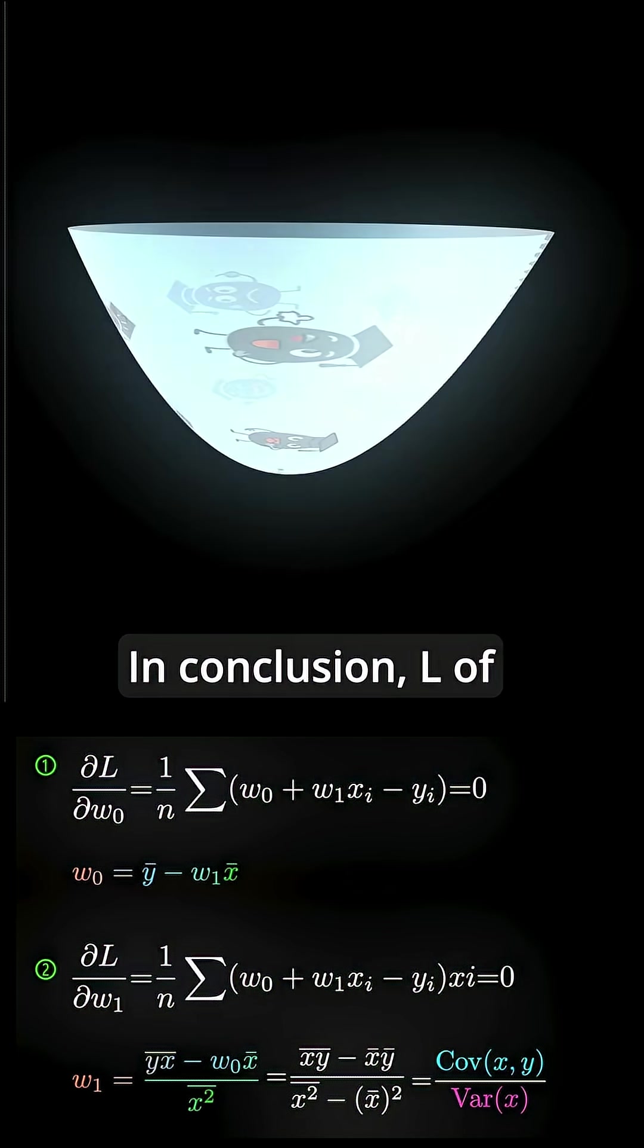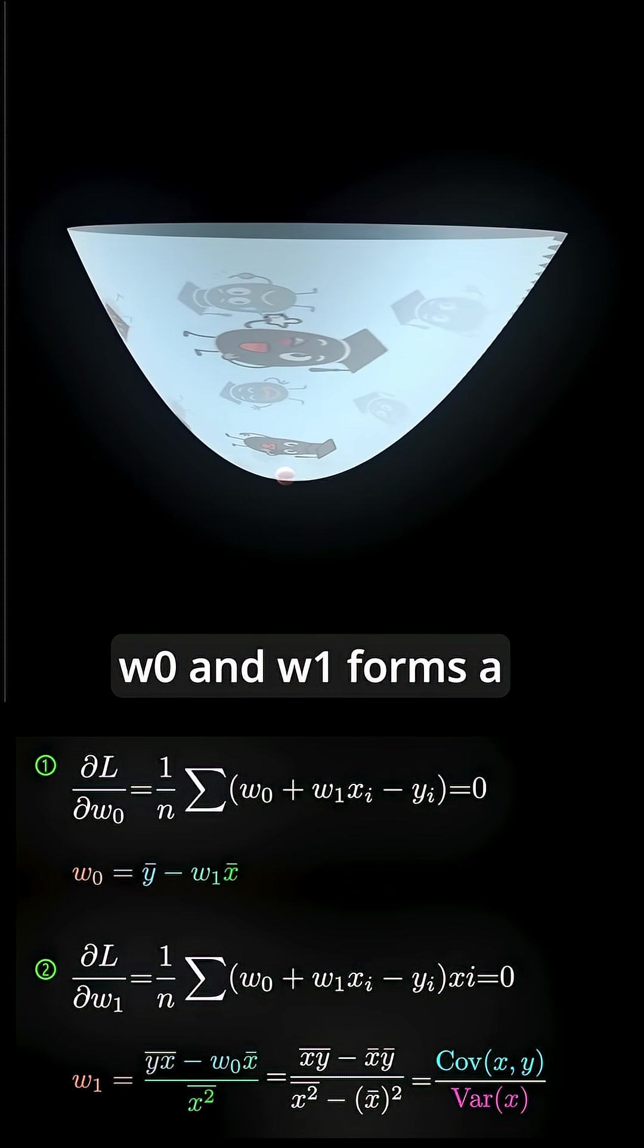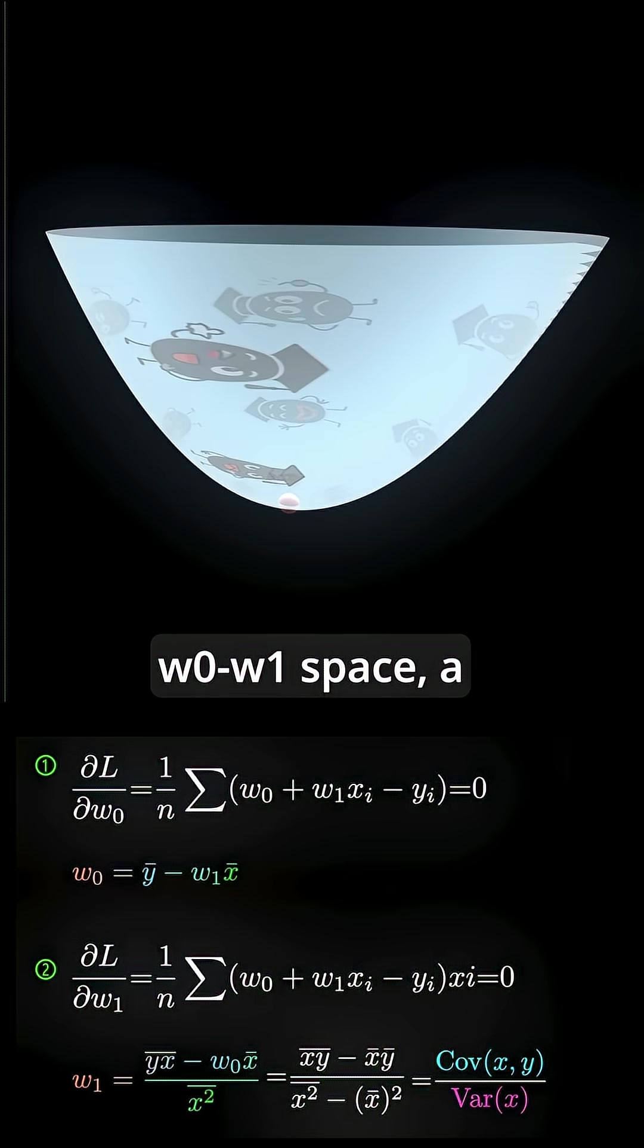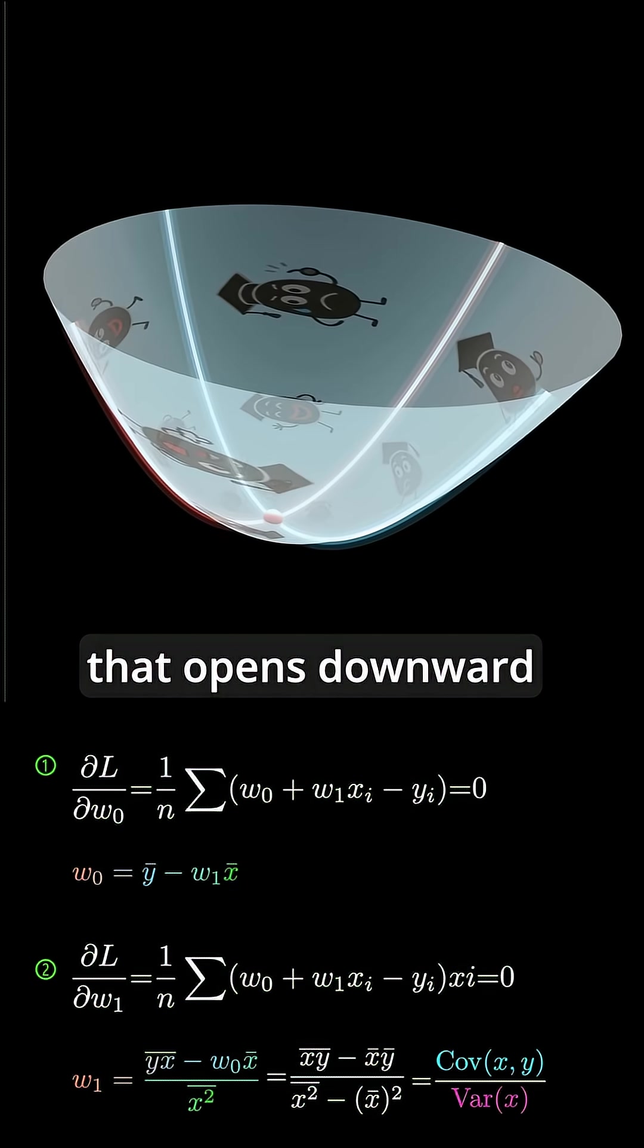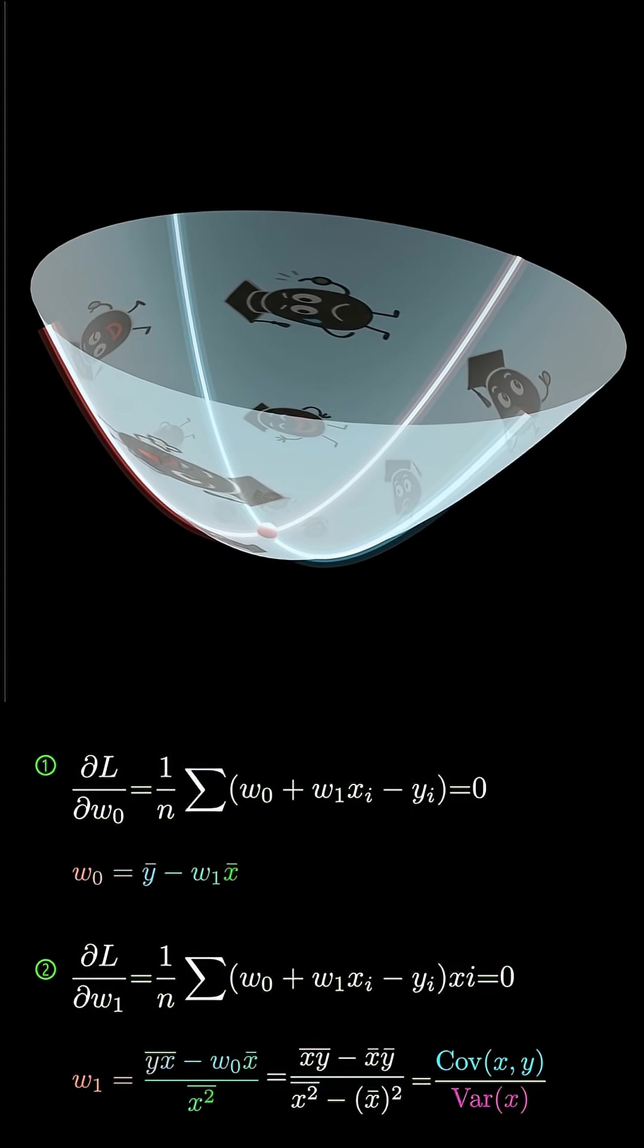In conclusion, L of w0 and w1 forms a paraboloid in the w0, w1 space, a three-dimensional bowl that opens downward in all directions.